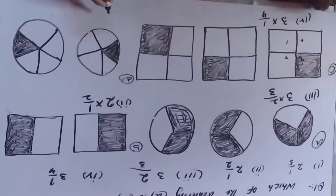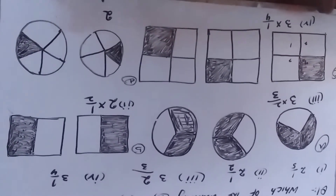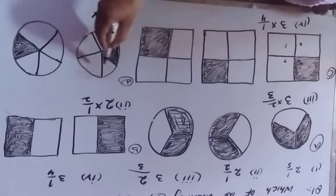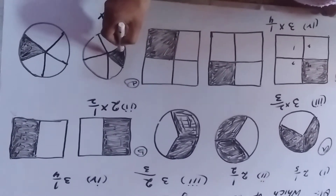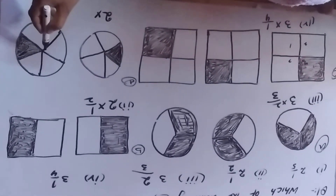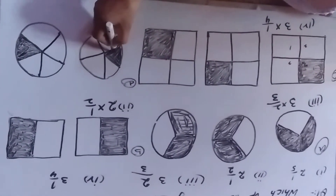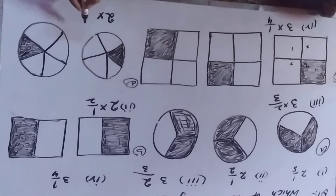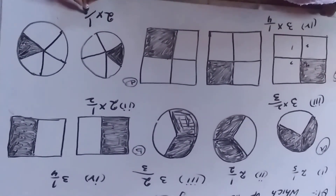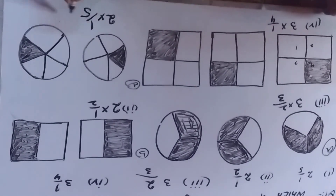Part D: we have two circles — one, two. And we have square parts — one, two, three, four, five. We have five square parts. And another one, we have six points: one, two, three, four, five.